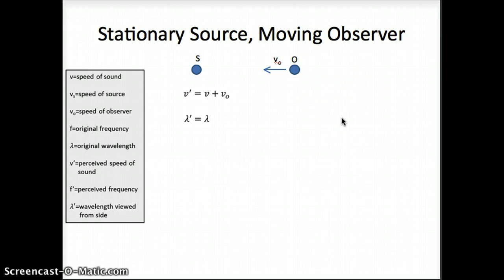The wavelength, the new wavelength, is just the original wavelength. If I view this picture from the side, our source is not moving at all. And so the distance from one peak to the next is exactly the same. That does not change just because our listener is moving. So I have v prime and lambda prime.